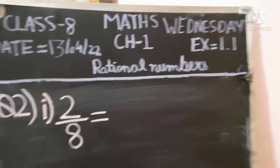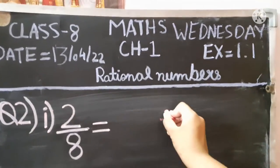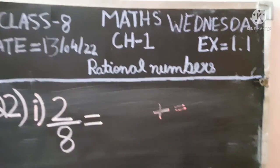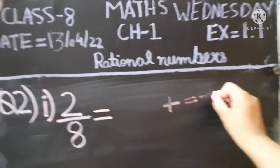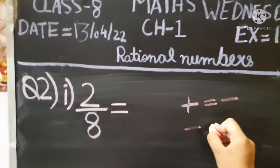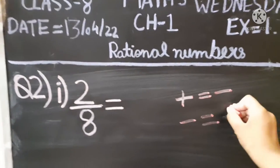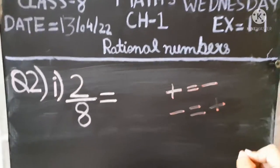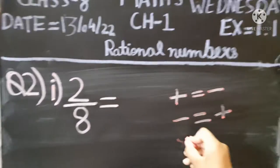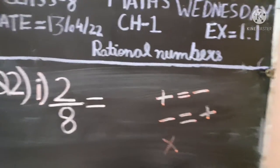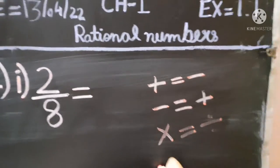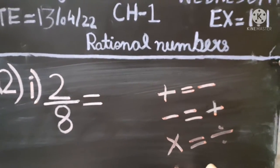I have told you: if any number is in plus and we have to find the additive inverse, it will be in minus. And if any number is in minus, it will be in plus form. Similarly, as with multiply and divide — if any number is in multiply it will be divided, and if it is in divide it will be in multiply.